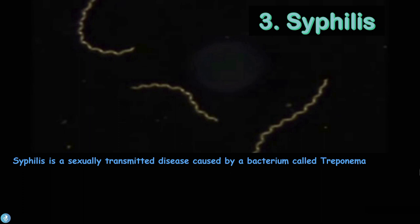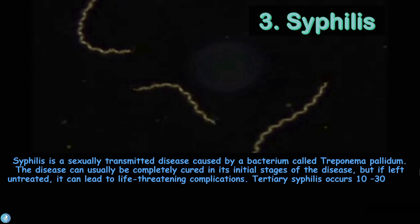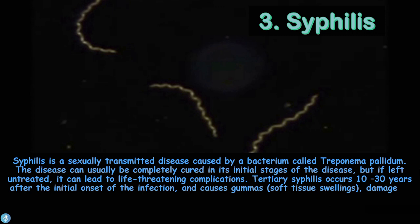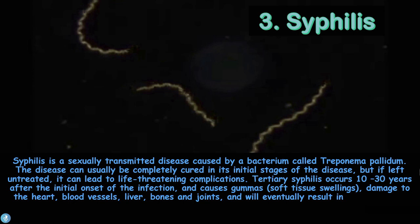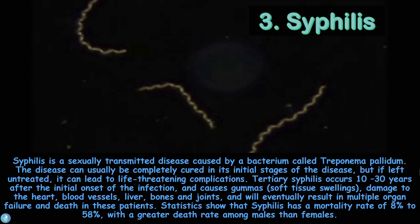Number three is syphilis, a sexually transmitted disease caused by the bacterium Treponema pallidum. The disease can usually be completely cured in its initial stages, but if left untreated it leads to life-threatening complications. Tertiary syphilis occurs 10 to 30 years after initial onset and causes gummas, damage to the heart, blood vessels, liver, bones, and joints, eventually resulting in multiple organ failure and death. Syphilis has a mortality rate of 8% to 58%, with a greater rate among males.